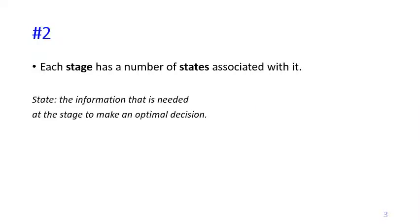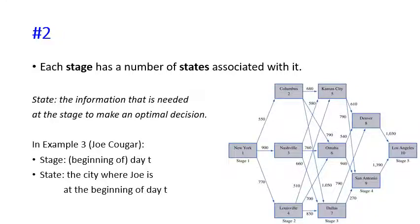The second characteristic is that each stage has a number of states associated with it. A state may be defined as the information needed at the stage to make an optimal decision. In the example of Joe Cougar, the stage is the day and the state is the city where Joe is at the beginning of day T.